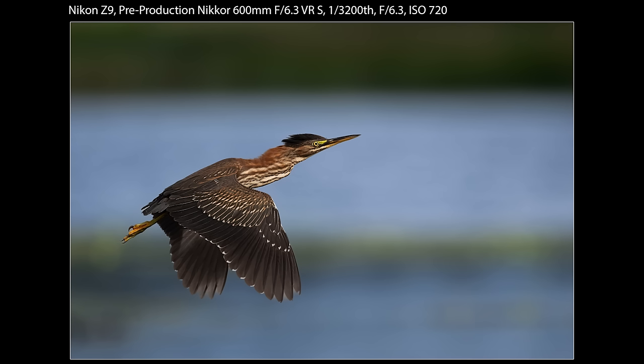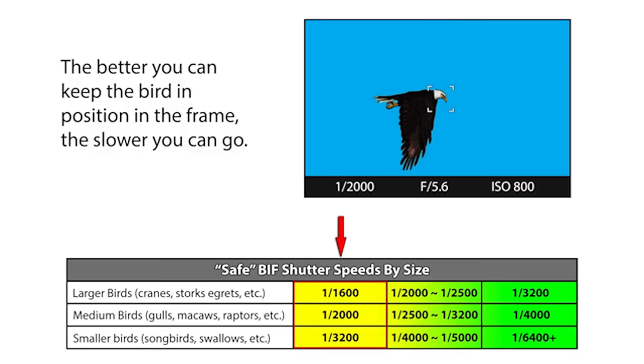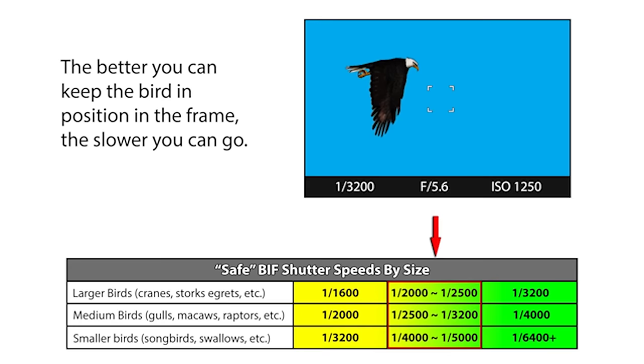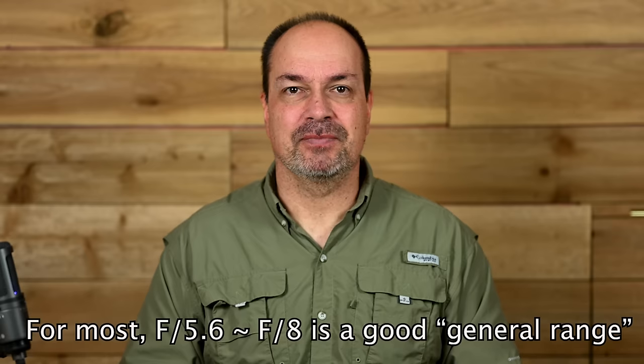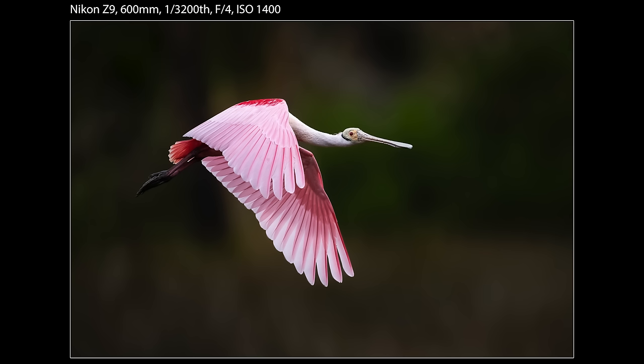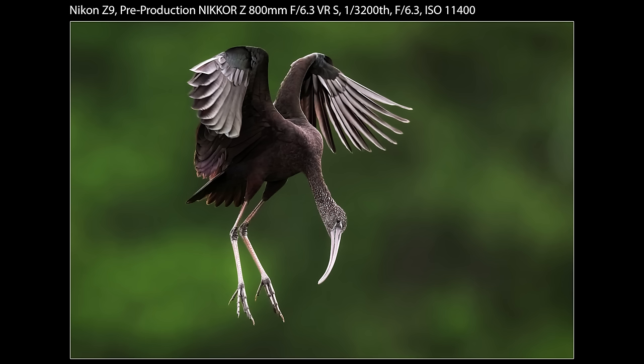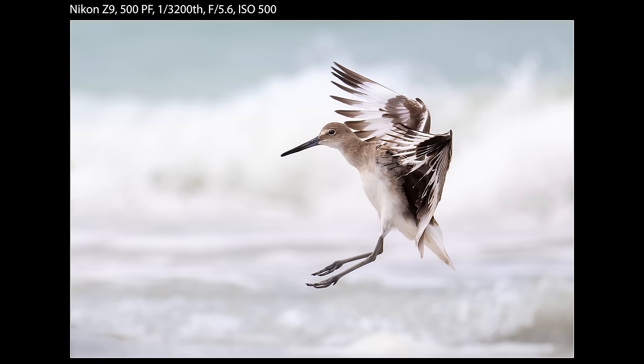Finally, my general non-AF settings for bird-in-flight work. For shutter speed, I generally start at about 1/3200th of a second, though it depends on the situation and the bird. For aperture, I tend to shoot wide open — that makes it harder since there's little room for focus errors, but I like the look and it helps tame busy backgrounds. For ISO, I like to keep it under 3200, but that depends on the shutter speed and f-stop I have to use.